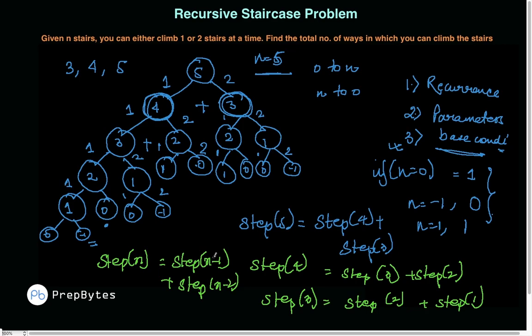This solves both remaining questions — we know the parameter to pass is n, and we've divided the problem into subproblems to get the recurrence relation. The key takeaway is that we couldn't arrive here directly; we had to solve test cases, observe base conditions, and build the recursion tree first. Now let's write the code.